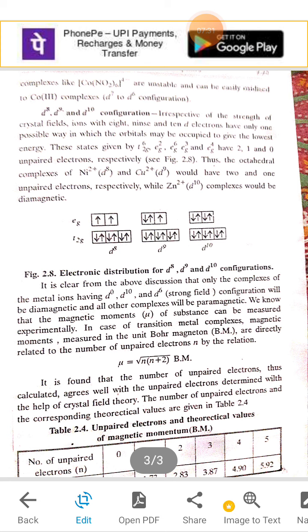When the number of unpaired electrons is 0, mu is 0. When number of electrons is 1, mu is 1.73. When it is 2, mu is 2.83.